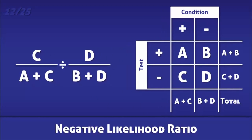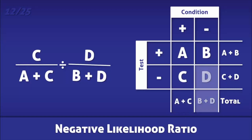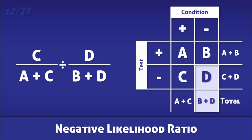The negative likelihood ratio is the likelihood that an individual with a negative test actually does not have the condition being tested for. It is calculated by dividing the false negative rate by the true negative rate, which is the specificity of the test.